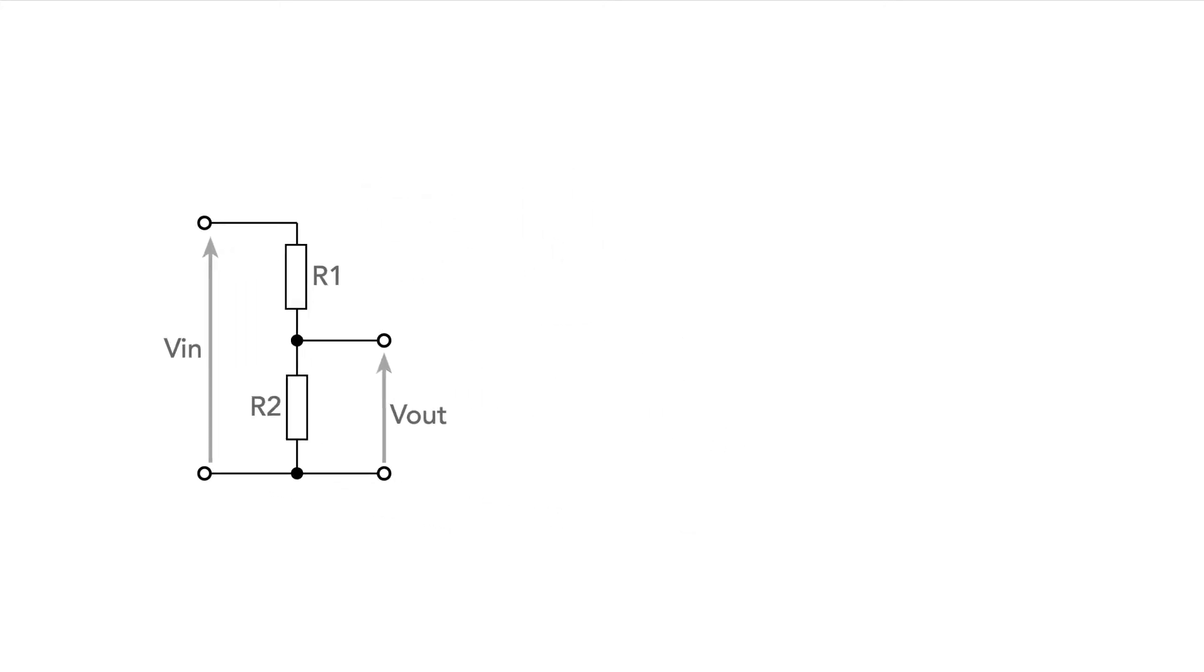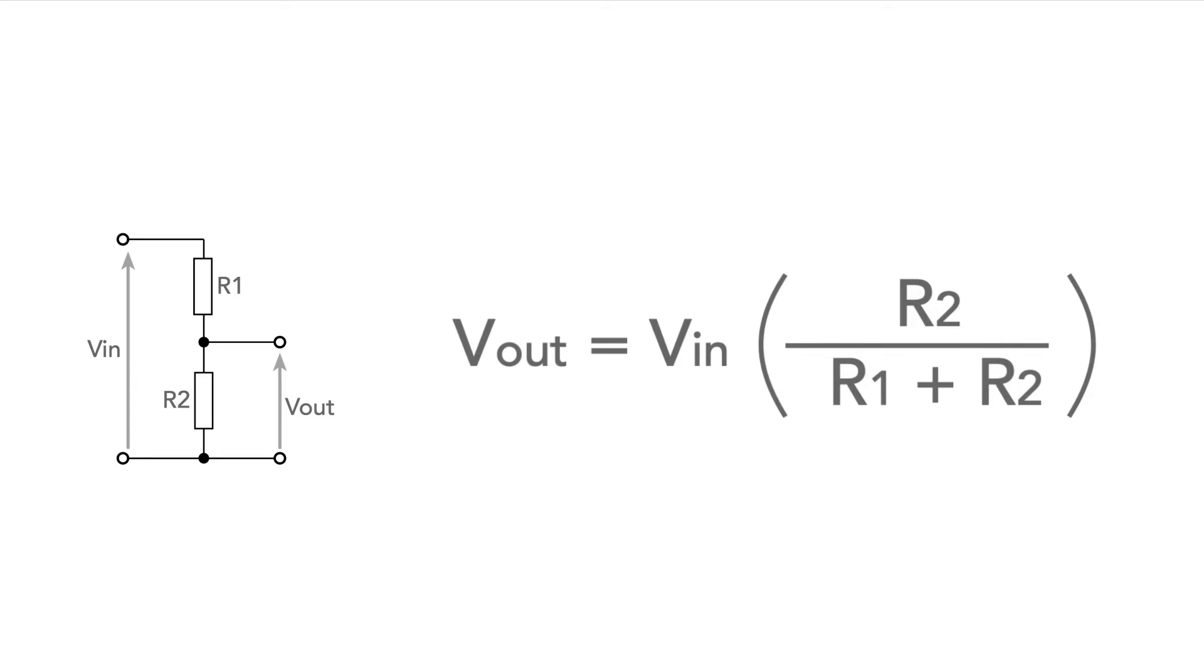This means the output voltage can be calculated from this formula: the output voltage is the value of resistor R2 divided by the total resistance of the chain, which is R1 plus R2, and this is multiplied by the input voltage.